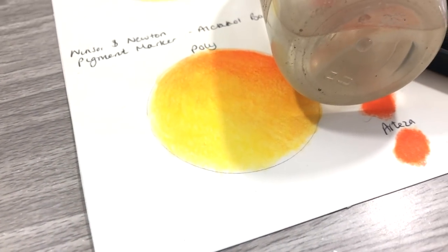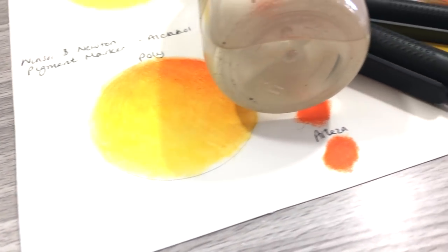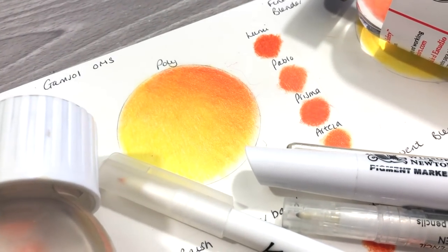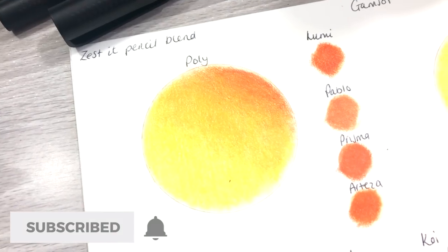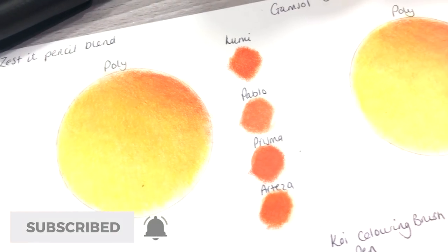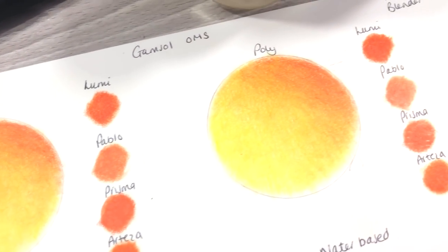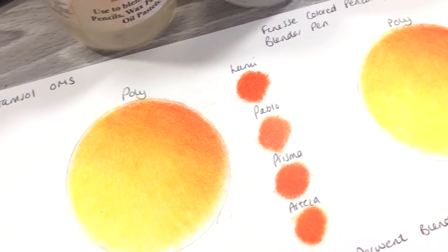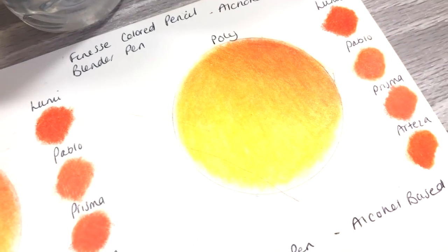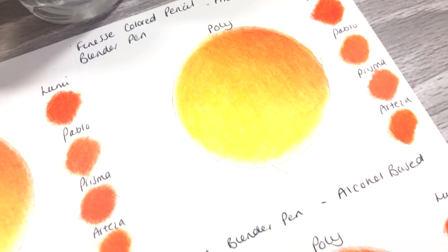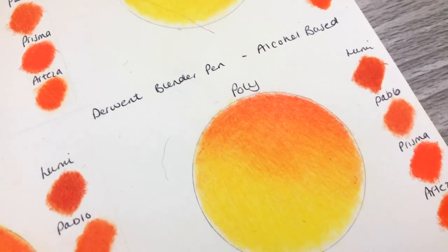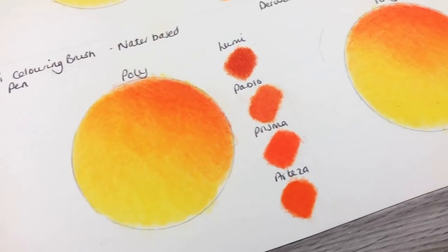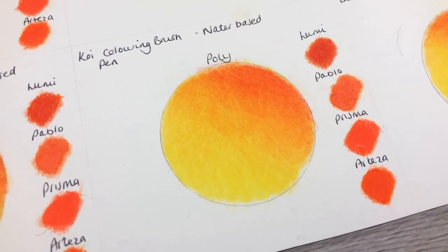The six products I've tried and compared here are Zest It pencil blend in the citrus smelling variety, Gamsol odorless mineral spirits, Finesse colored pencil blender pen, Winsor & Newton pigment marker colorless blender, Koi coloring brush pen, and finally Derwent blender pens. Out of these, three are alcohol based and one is water based, which is the Koi coloring brush pen.